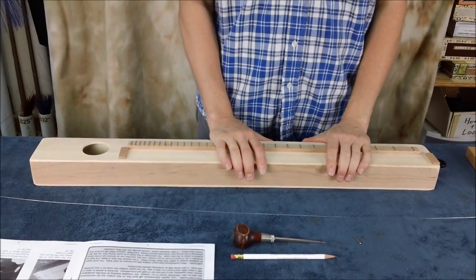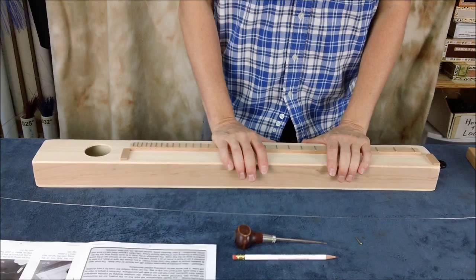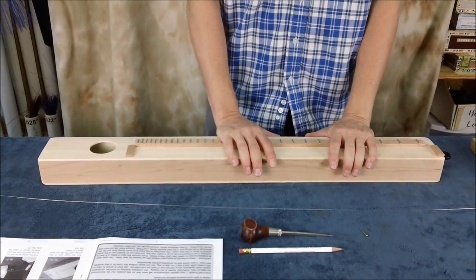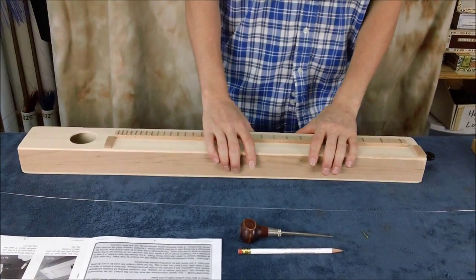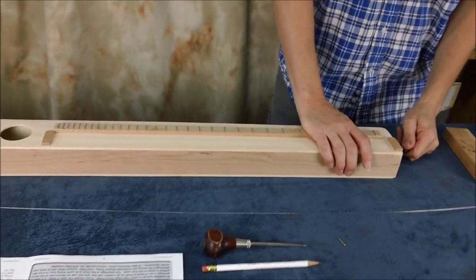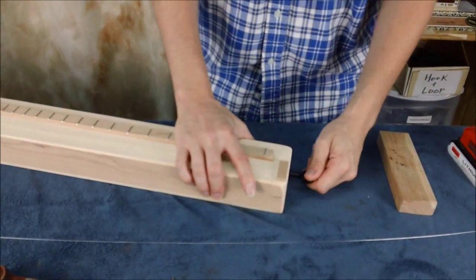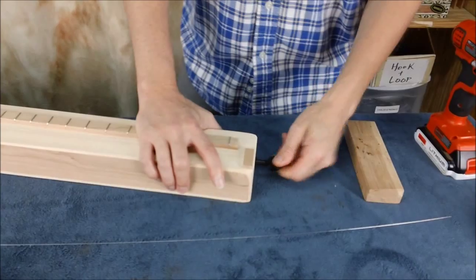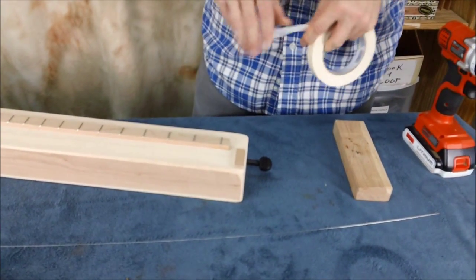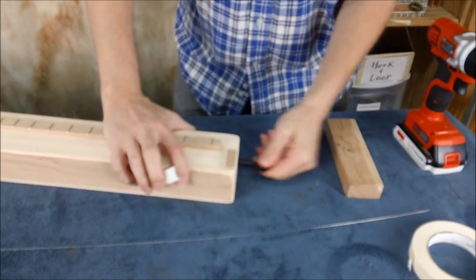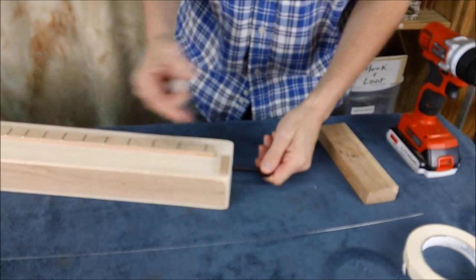So before we can put the string on, we have to do a couple things here. This is step 10 in your instructions. The first thing we're going to do is we need to drill a hole in our violin peg down here. We want to mark the location of that hole and it just needs to sit out from here a little bit.